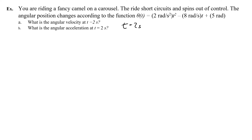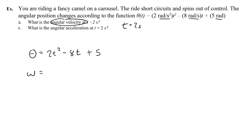To make things easier, I'll note t equals 2 seconds. I'm going to rewrite the theta equation in more math-friendly terms: theta equals 2t squared minus 8t plus 5, just ignoring the units and trusting that they work. To find the angular velocity, I take the derivative: bringing down the power and reducing it, 2 times 2 gives 4t, minus 8, and the constant 5 goes away. So omega equals 4t minus 8. Plugging in t equals 2 gives omega equals 0.